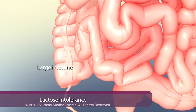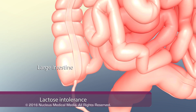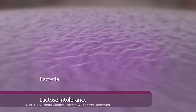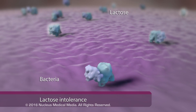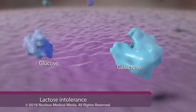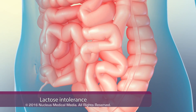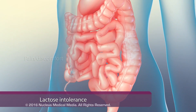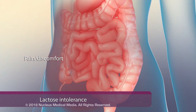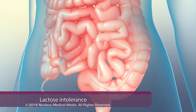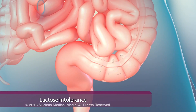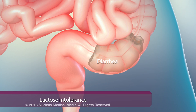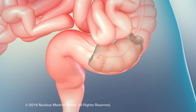The unabsorbed water and undigested lactose enter the large intestine, where bacteria metabolize the lactose. This process generates gas that fills the large intestine, causing abdominal pain and flatulence. In addition, lactose in the large intestine causes water retention, producing watery feces known as diarrhea.